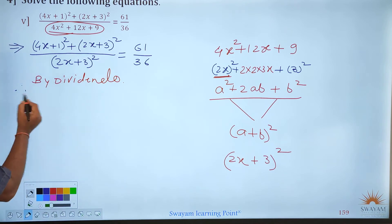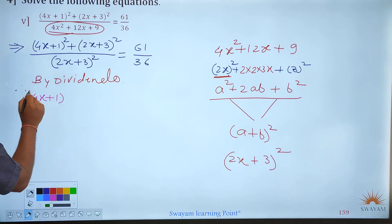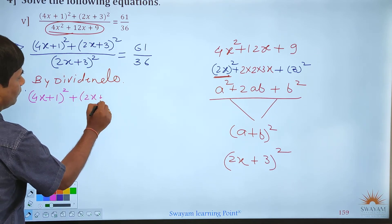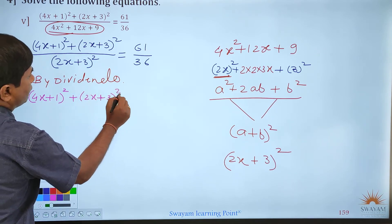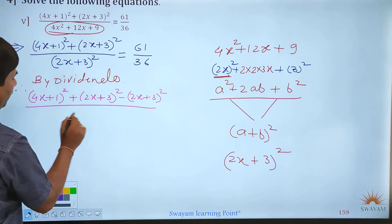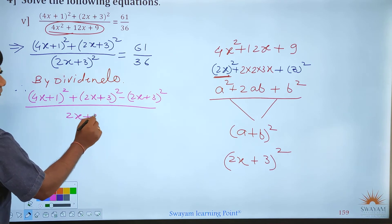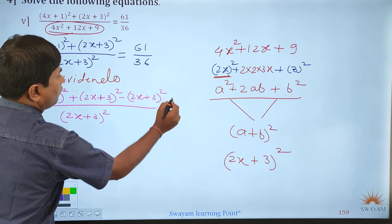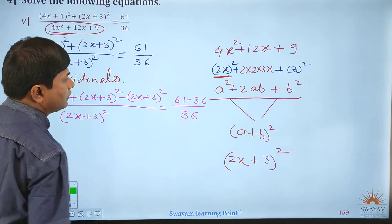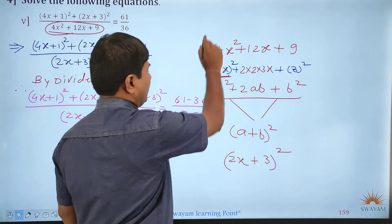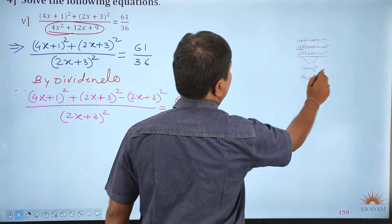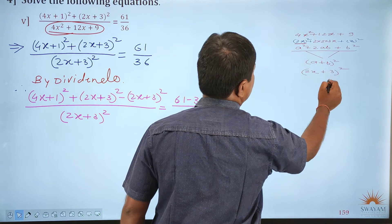So the dividendo process: (4x+1)² plus (2x+3)² minus (2x+3)², divided by (2x+3)², is equal to 61 minus 36 divided by 36. This is what is called dividendo. This concept was explained so you understand how we made this change.